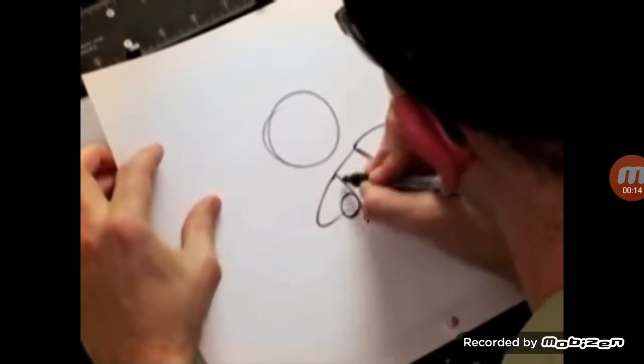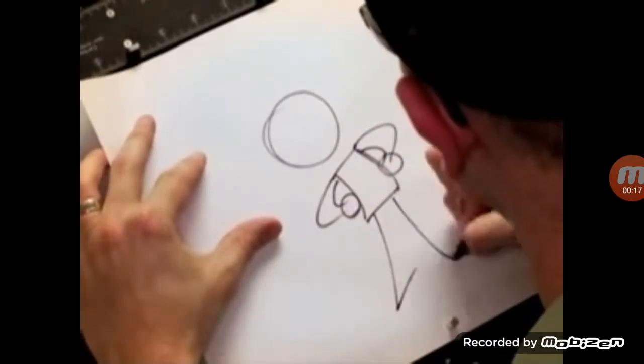Her arms are two tubes with circles on the ends for her hands. Her legs are basically two kind of elongated triangles with a line down the middle.